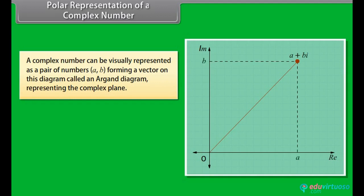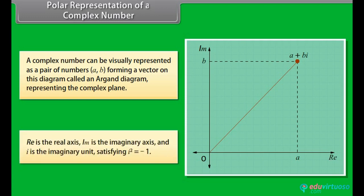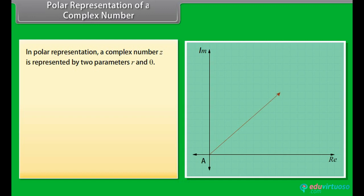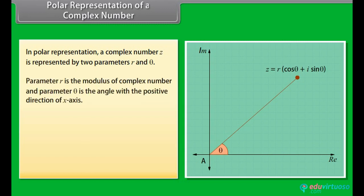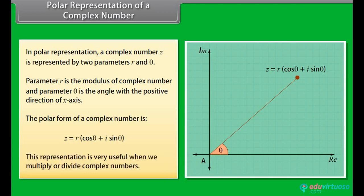Polar representation of a complex number: A complex number can be visually represented as a pair of numbers (A, B) forming a vector on the Argand diagram, representing the complex plane. The real axis is RE, the imaginary axis is IM, and iota is the imaginary unit satisfying iota squared equals minus 1. In polar representation, a complex number Z is represented by two parameters R and theta: R is the modulus and theta is the angle with the positive direction of the x-axis. The polar form is Z equals R into (cos theta plus iota sine theta), which is very useful when multiplying or dividing complex numbers.